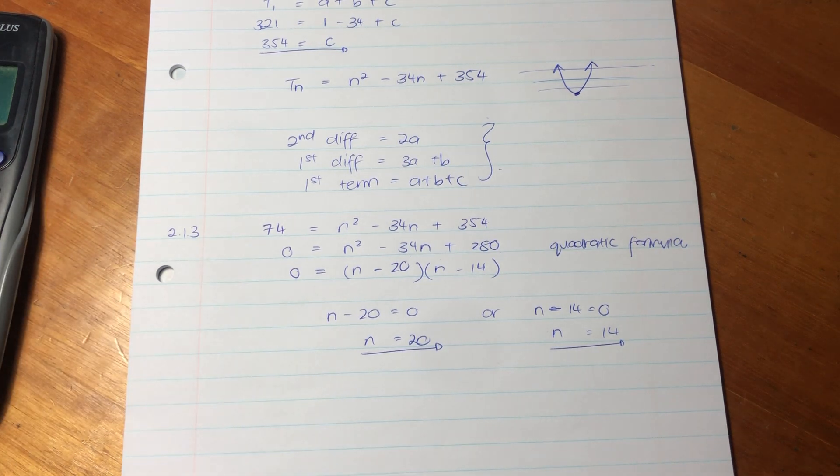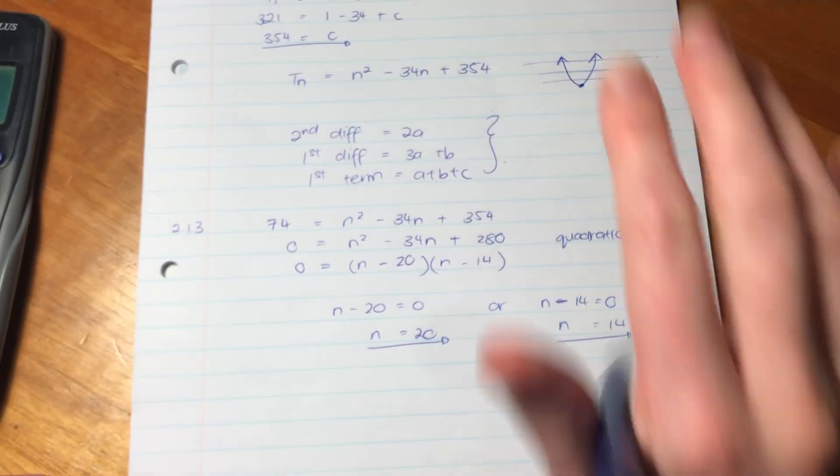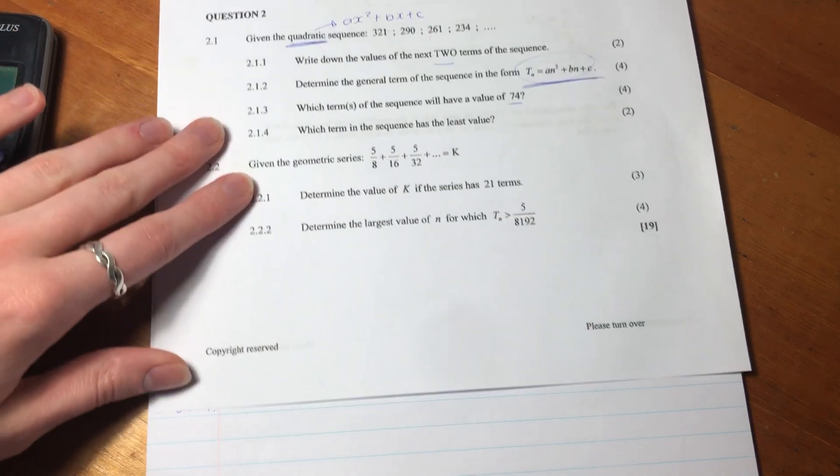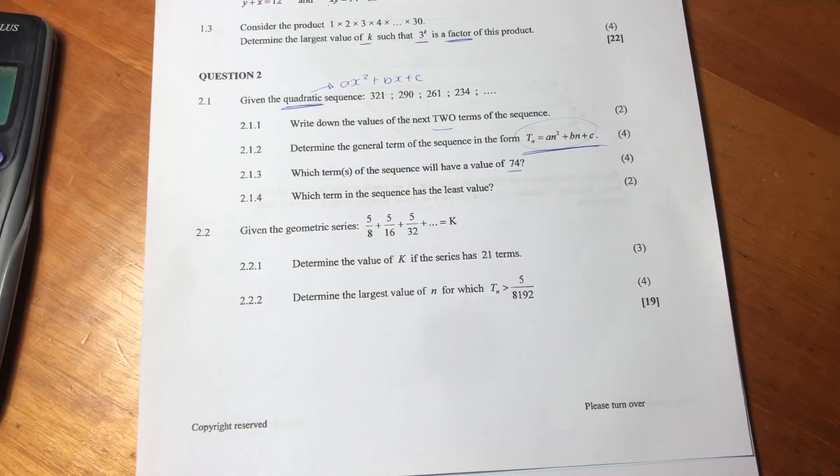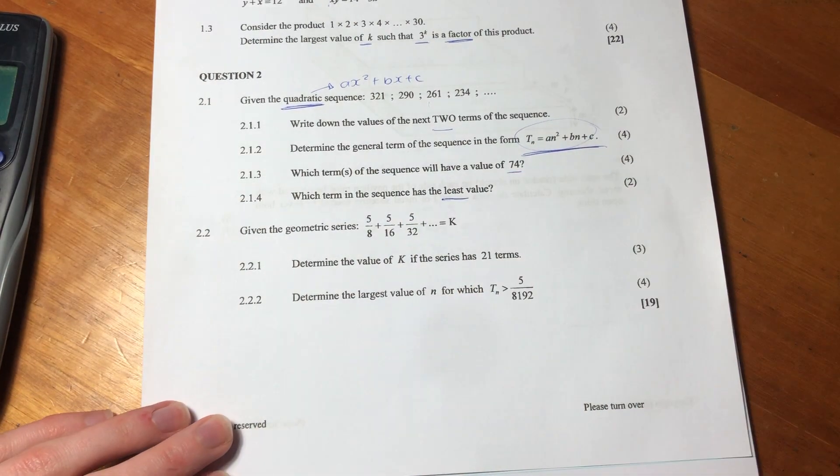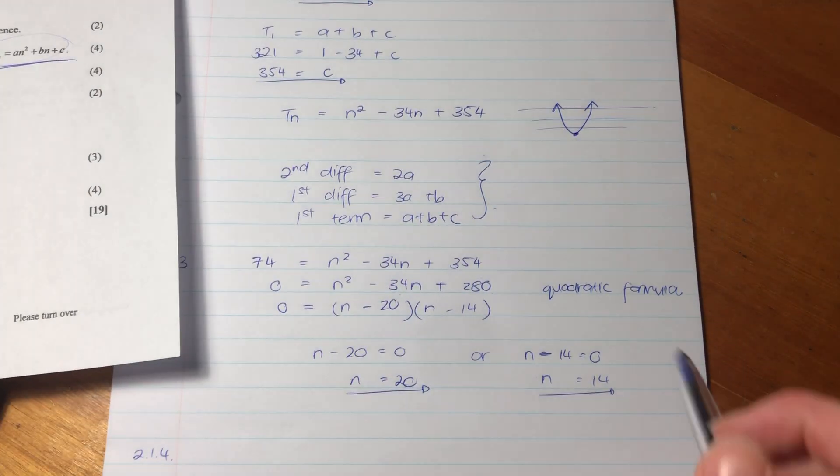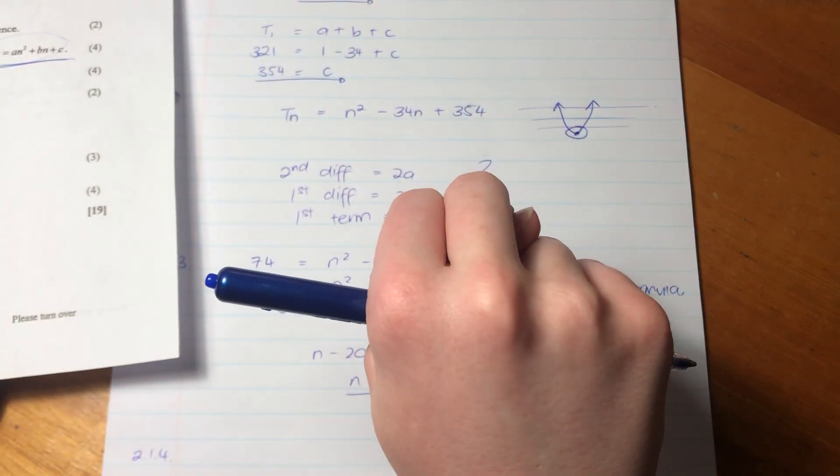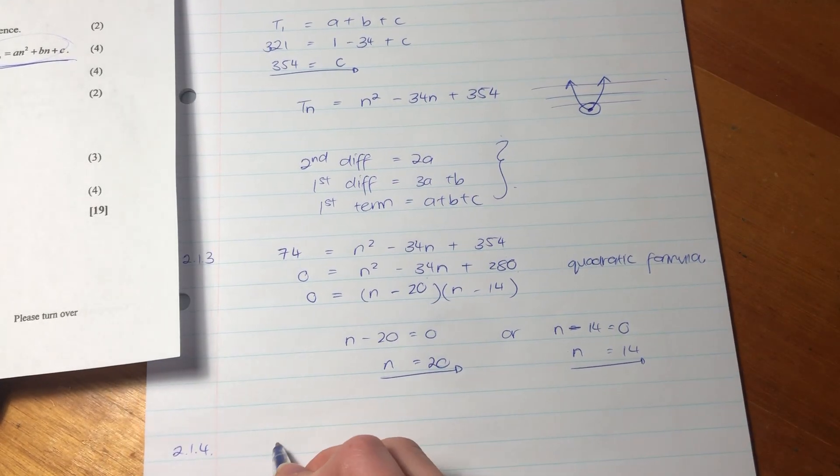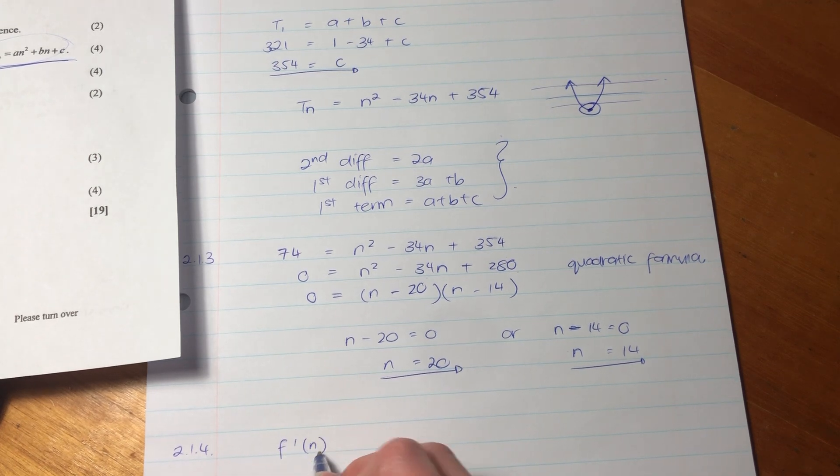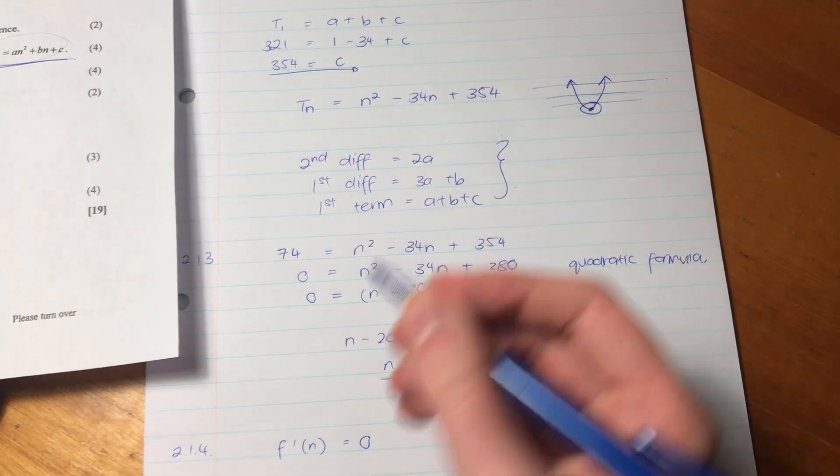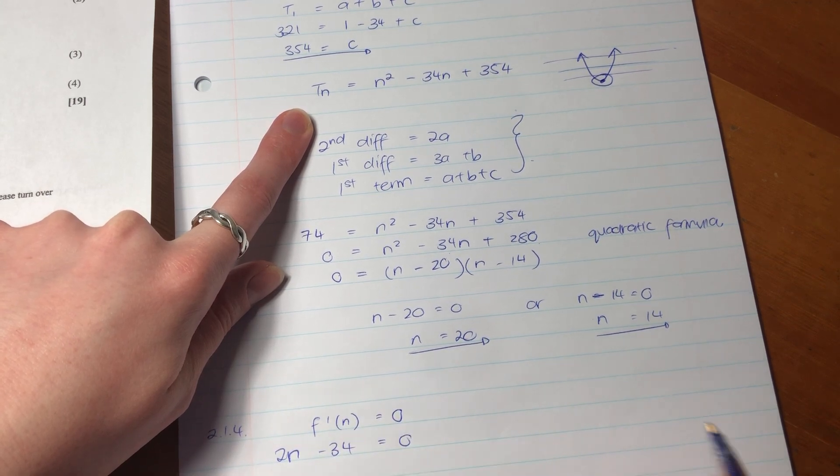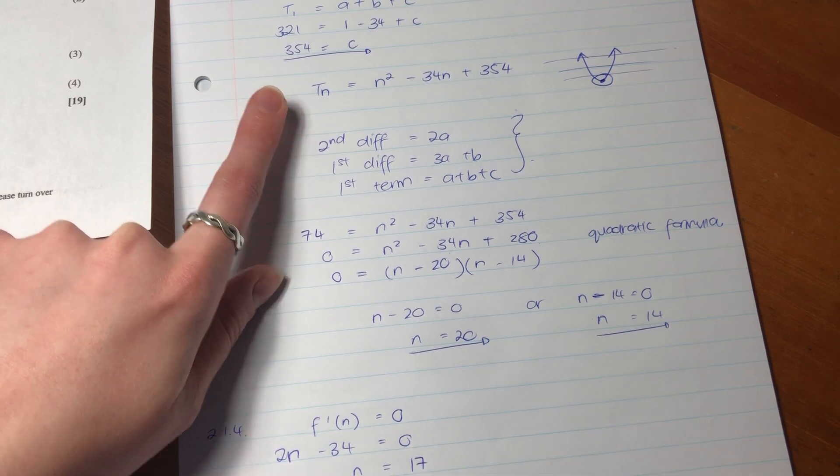So don't get freaked out by that stuff. And don't forget about your functions knowledge, just because you're doing a sequences and series question. Math is not this big compartmentalized thing. It's rather a way of solving a problem. So don't just forget about that. So that's that question. And let's now jump into 2.1.4, which is the last question for this video. So it says, which term in the sequence has the least value? Now you're going to be saying, what does that mean? But I've just given you a clue. We showed that it's a positive parabola. The least is going to be the turning point, isn't it?